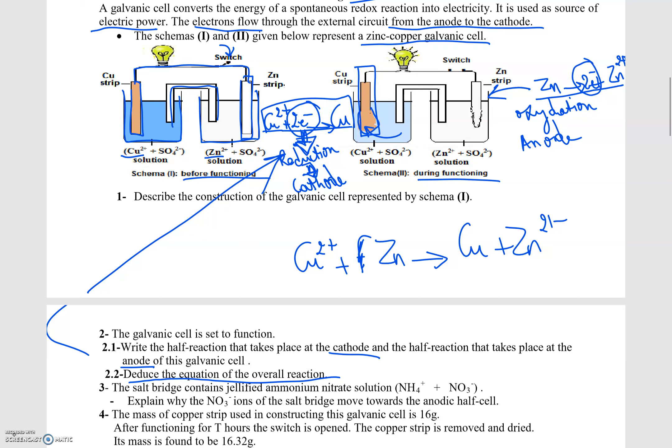The salt bridge contains gelified ammonium nitrate solution (NH₄⁺ and NO₃⁻). The NO₃⁻ ions move towards the anode or the cathode.